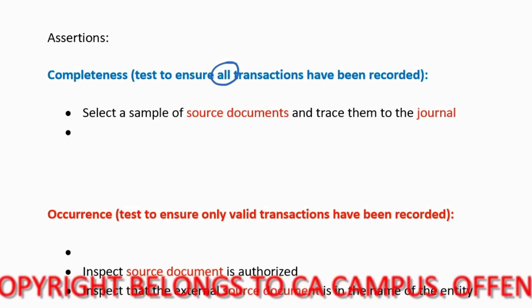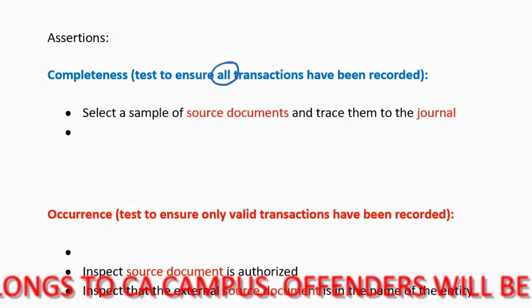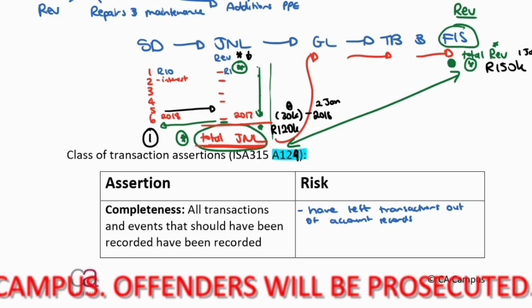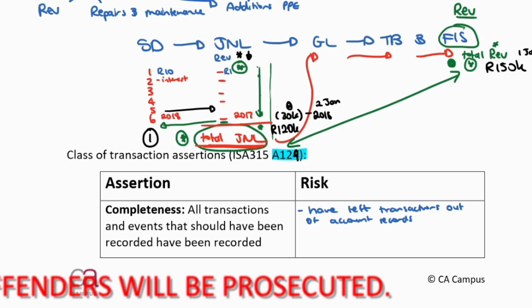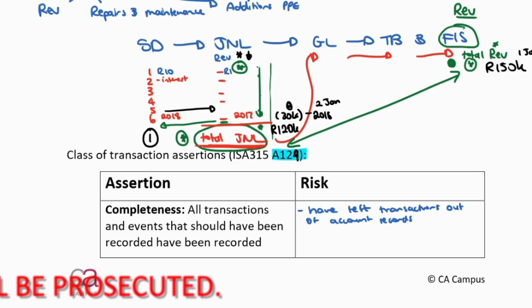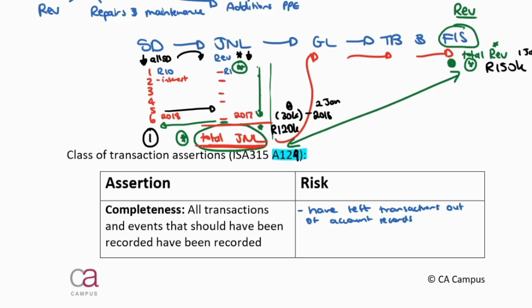How are we going to test that? Let's go back to the summary. Where do they leave the transaction out? They leave it out of the journal, out of this list over here. So if it's not in that list, can I start with that list to see that it's not there? No, because it's not there. But what do I know must be there? I know that all of these source documents that prove risks and rewards have transferred should be in the journal. So my starting point for completeness has to be with the source documents.